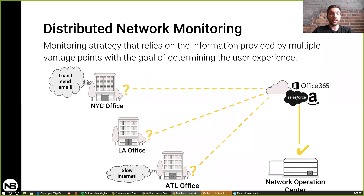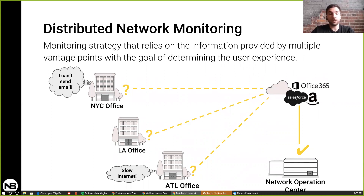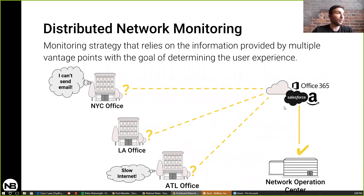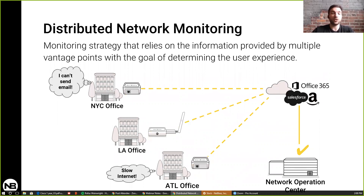A use case for distributed network monitoring would be when users at remote sites complain about issues accessing cloud applications. When you're at the NOC, it's difficult to see what is going on and you rely on user information. Typically, users will say things like 'it's not working' or 'it's slow' — essentially like going to the doctor and saying 'my body hurts, fix me.' You don't know if it's an isolated incident or affecting multiple locations and applications. The way to counteract that is to deploy a sensor at your remote locations to collect information in real time, see when the issues started, and who's affected.